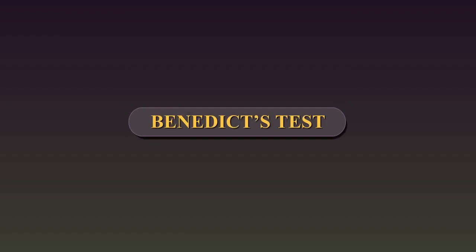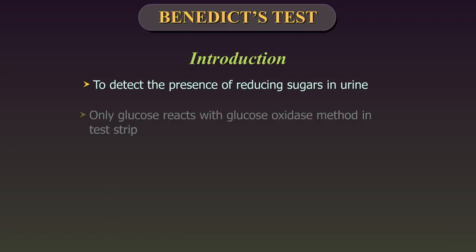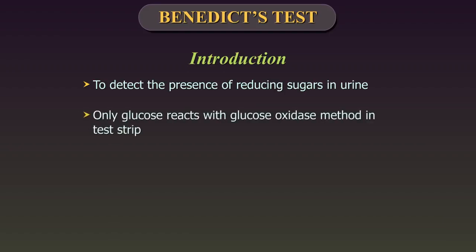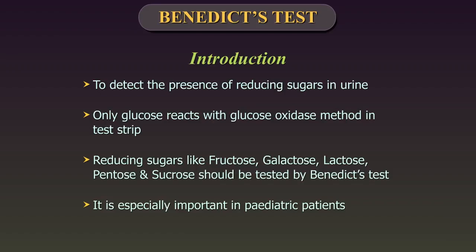Benedict's test is used to detect the presence of reducing sugars in urine. Sugars in urine other than glucose do not react with the glucose oxidase method in test strips. Hence, suspected cases for fructose, galactose, lactose, pentose, and sucrose should be tested by Benedict's test. It is especially important that this test is performed in young paediatric patients.